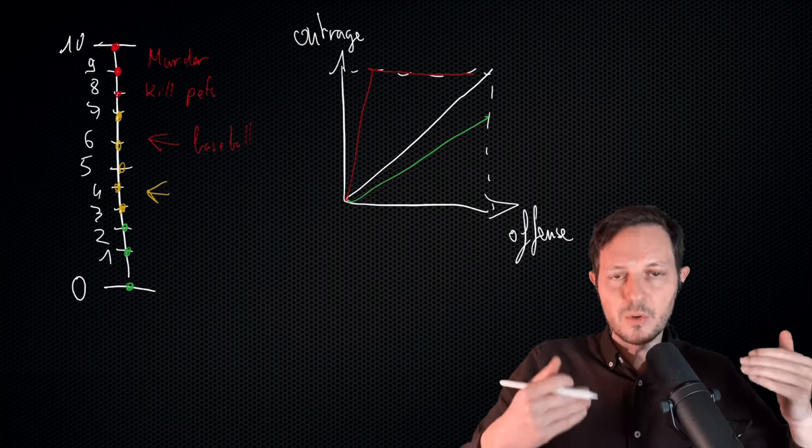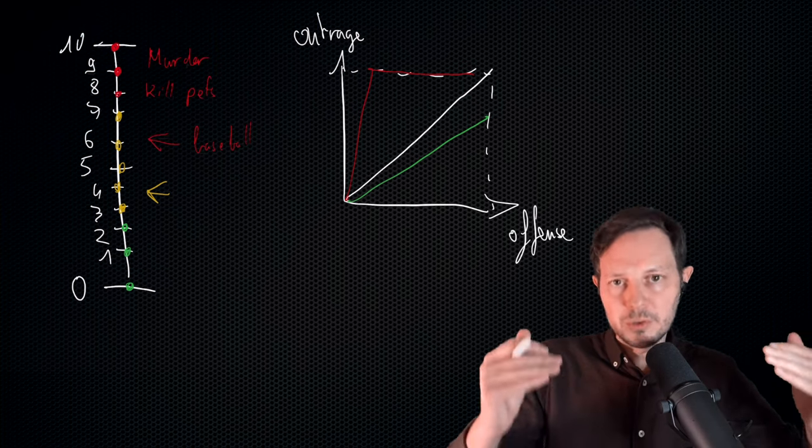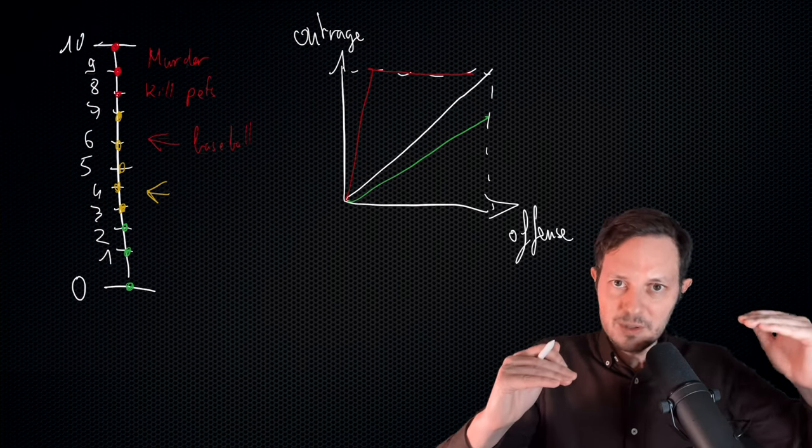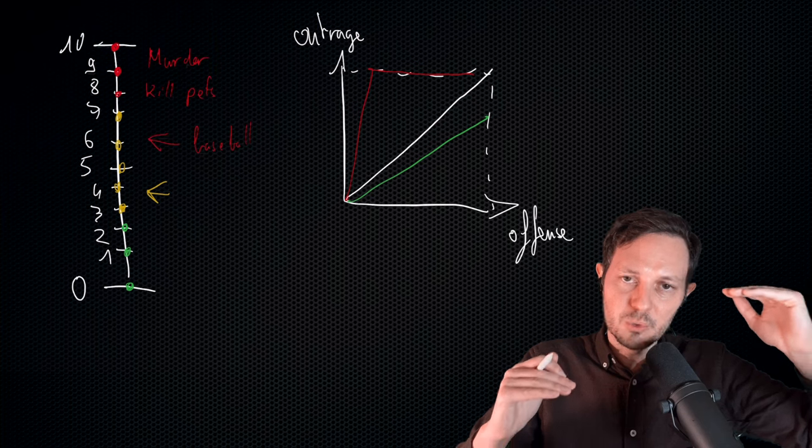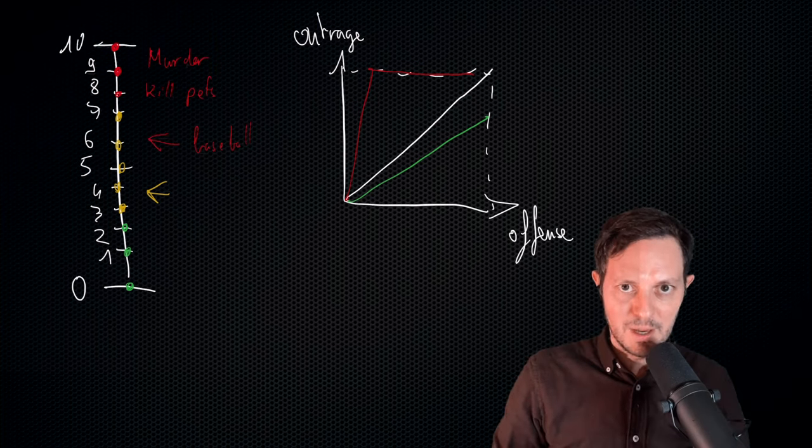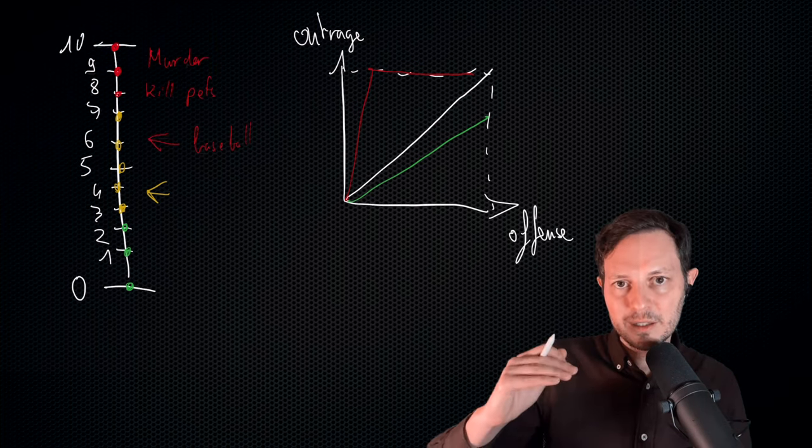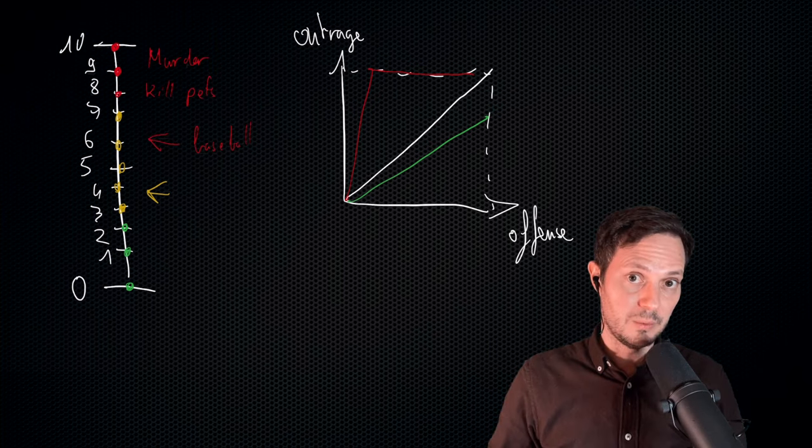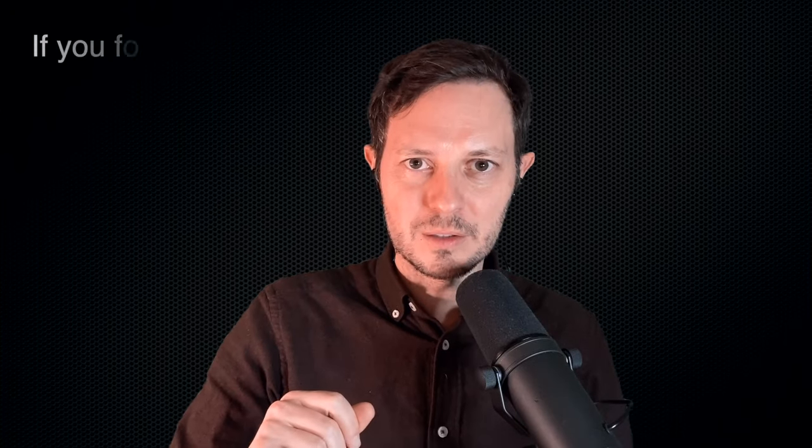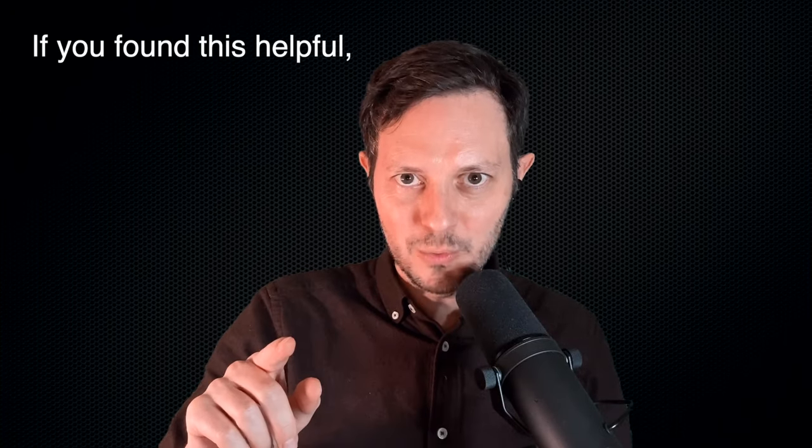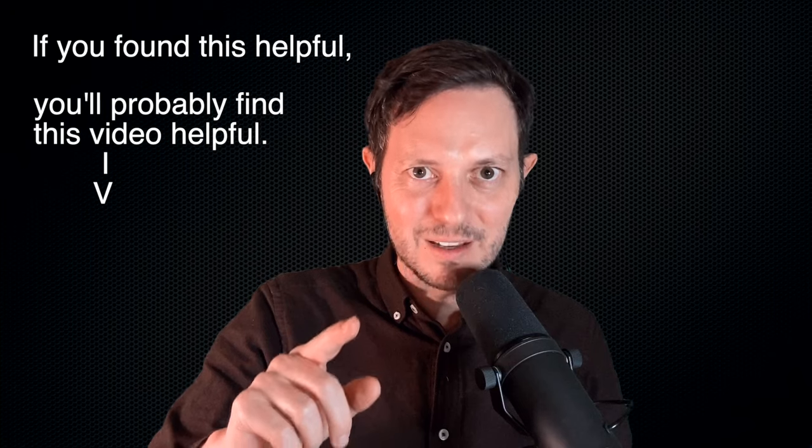But if you see there's a massive skew between your side and their side, if you see that systematically they go way beyond what you're comfortable with, they're not doing that because of something you did. They're doing that because they are okay with it, and they are blaming it on you.